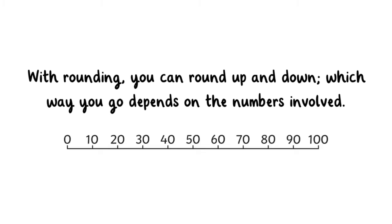With rounding, you can round up and down. Which way you go depends on the numbers involved. When we round up or down, the result isn't completely accurate, but it allows us to solve problems quickly in our heads.